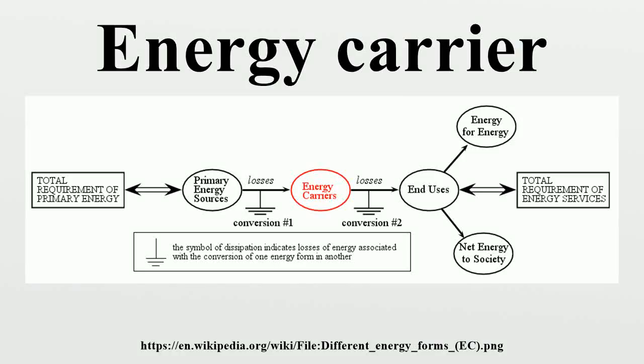An energy carrier is a substance or sometimes a phenomenon that contains energy that can be later converted to other forms, such as mechanical work, heat, or to operate chemical or physical processes. Such carriers include springs, electrical batteries, capacitors, pressurized air, dammed water, hydrogen, petroleum, coal, wood, and natural gas. An energy carrier does not produce energy;